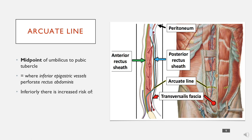Inferiorly, because there's no aponeurosis, there is a risk of direct hernias. A direct hernia is where you have a protrusion coming straight through the abdominal wall, whereas an indirect hernia comes through the inguinal canal — and that usually involves bowel. Because there's less support inferiorly, direct hernias are more likely. The other thing that can happen is occult hemorrhage: if a patient has a bleed in their inferior epigastric vessels, they can bleed quite significantly and you won't recognize it until the patient is really unwell, because they won't get as much pain as they would if the bleed were constrained by the fascia above.